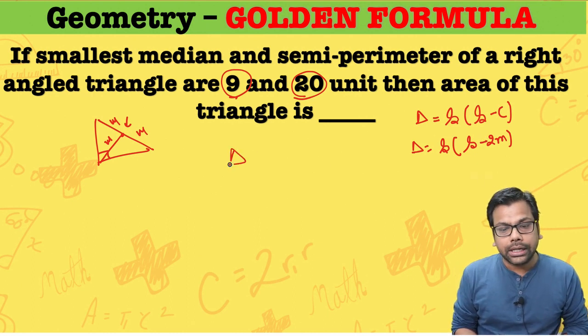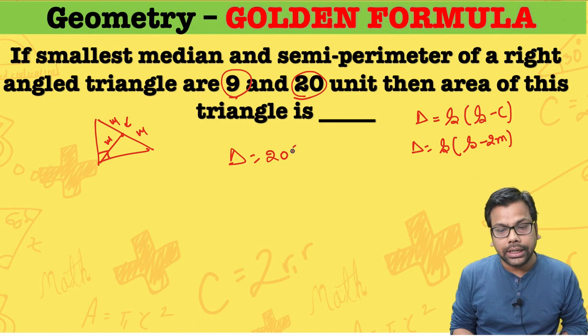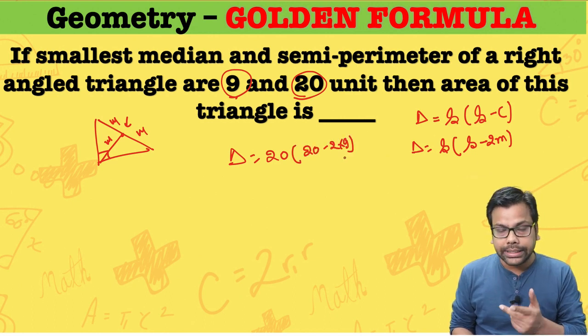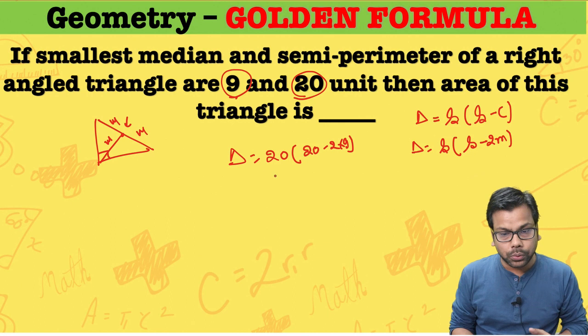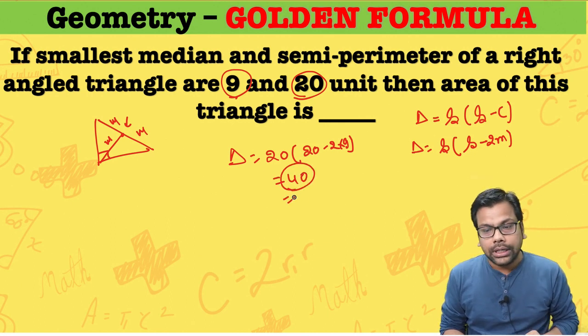So from the direct formula, the area of the triangle is nothing but 20 — that is the semi-perimeter — into (20 minus 2 into 9). This gives 20 minus 18, which is 2. So the answer to this question is 40 square units.